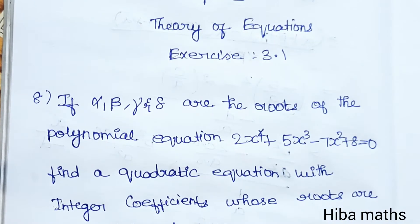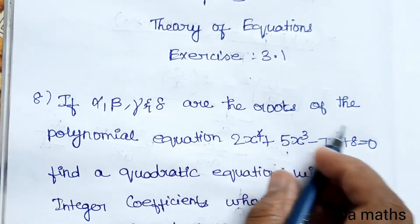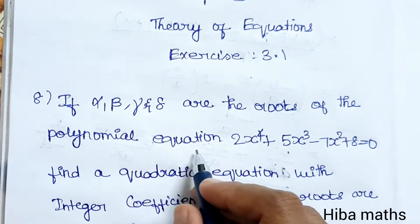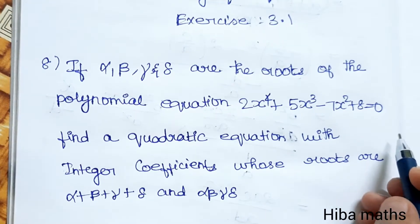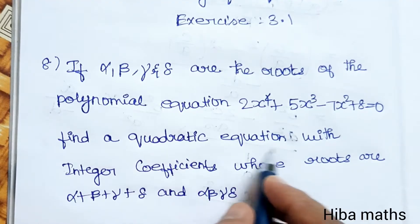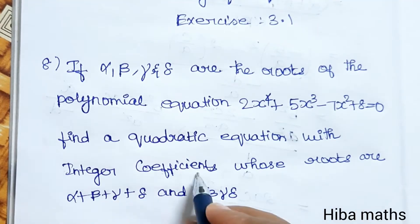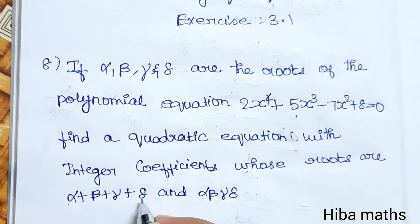8th question: If α, β, γ, and δ are the roots of the polynomial equation 2x⁴ + 5x³ - 7x² + 8 = 0, find a quadratic equation with integer coefficients whose roots are α + β + γ + δ and αβγδ.